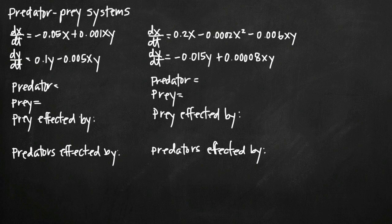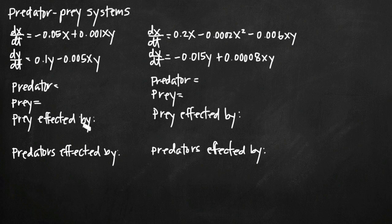Today we're going to be talking about a lot of different things about predator-prey systems. In the first part of this problem we've been given two different predator-prey systems. The first one is the system on the left defined by dx/dt and dy/dt, and the second one is over here on the right. We've been asked to determine which variable, either x or y, represents the predator and which one represents the prey.